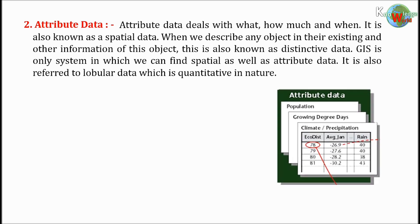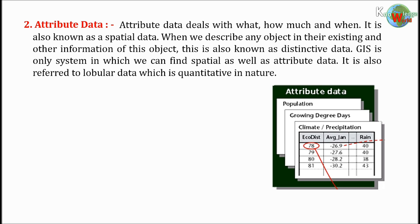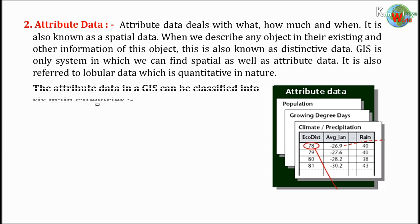Attribute data deals with what, how much, and when. It is also known as spatial data. When we describe any object and its existing information, this is also known as distinctive data. GIS is the only system in which we can find spatial as well as attribute data. It is also referred to as tabular data, which is quantitative in nature. The attribute data in a GIS can be classified into six main categories.